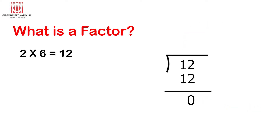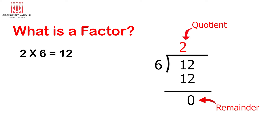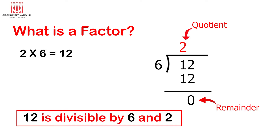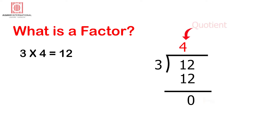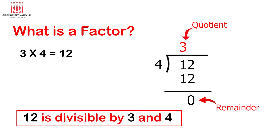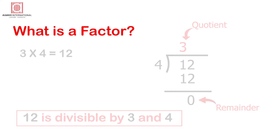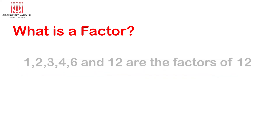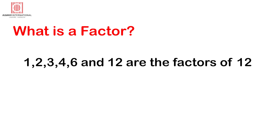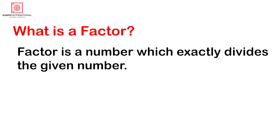When we divide 12 by 2 we get quotient 6, and dividing 12 by 6 gives quotient 2. In both cases the remainder is 0, so 12 is divisible by 2 and 6. Pair 3: 3 × 4 = 12. Dividing 12 by 3 gives quotient 4, and dividing 12 by 4 gives quotient 3, with remainder 0. Thus 12 is divisible by 1, 2, 3, 4, 6, and 12 — these are all the factors of 12.